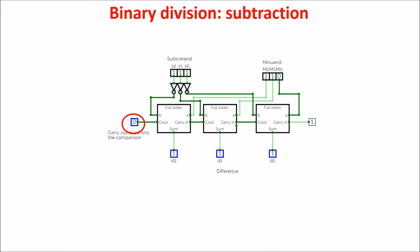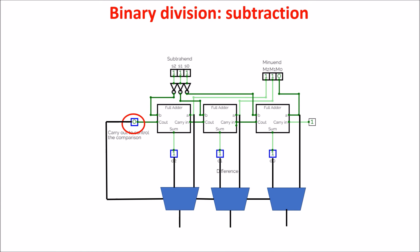We can use this carryout to understand whether the difference is positive or negative — whether the divisor is larger or smaller than the portion of the dividend we are dealing with. We use this bit to control a multiplexer, which either lets the difference of the subtraction pass through, or restores the previous bits. If the difference is positive, the divisor fits in the dividend, so we take the subtraction result, and 1 is the quotient bit. If the difference is negative, we restore the dividend portion, and 0 is the quotient bit.